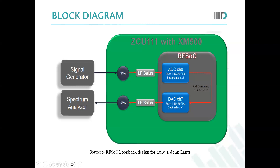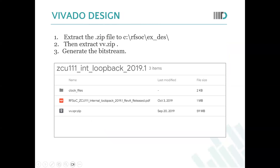We need to take care of the power level during the input we are giving to the RFSOC port. We have a file for this example in the form of a .bit file. We need to load that file, then generate the bitstream for that.